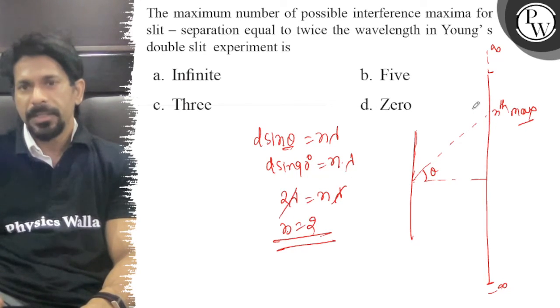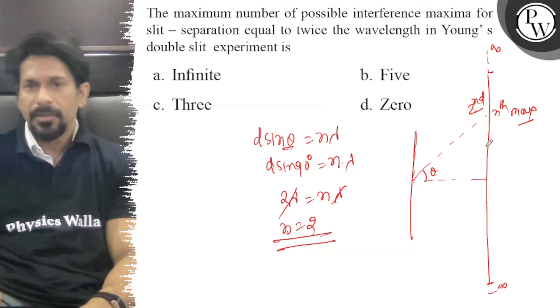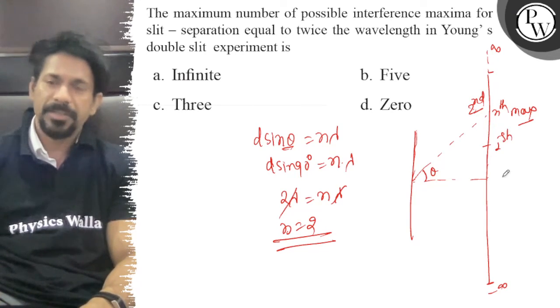So if you get two maxima, this will be the second maxima and the first maxima on the infinite screen.